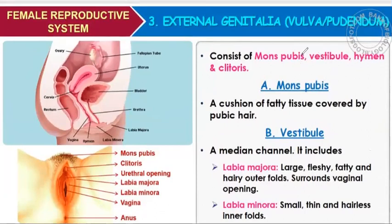It consists of external genitalia. What is external genitalia? It is called vulva, also known as pudendinum. Pudendinum is the synonym of vulva. Vulva is the external genitalia of the female — the genital organs that we are able to see from outside in a female.